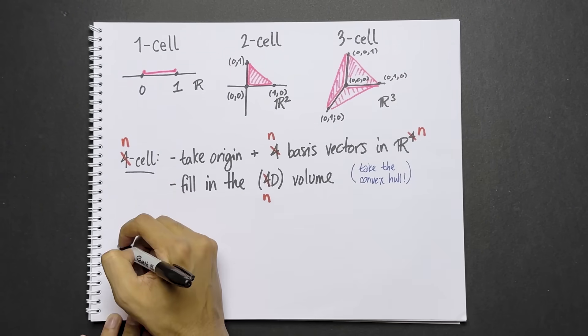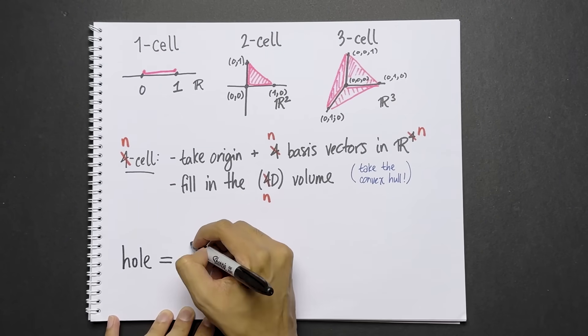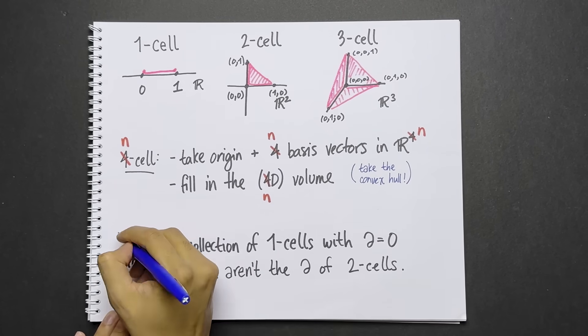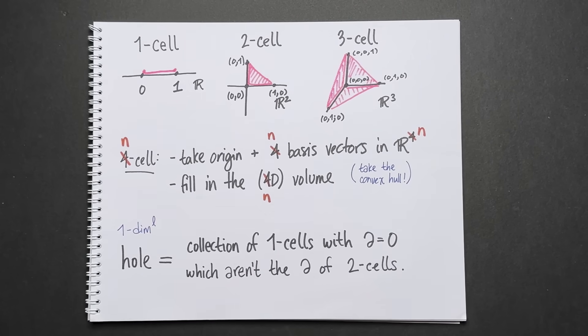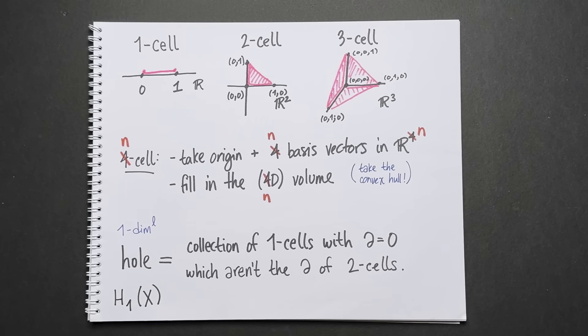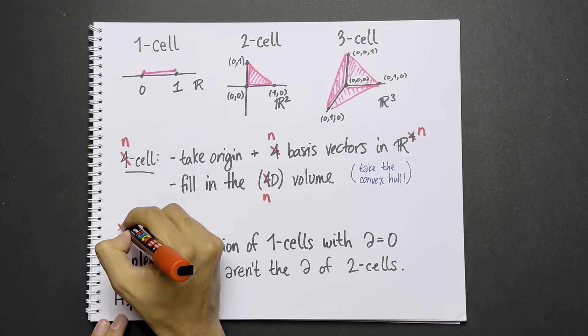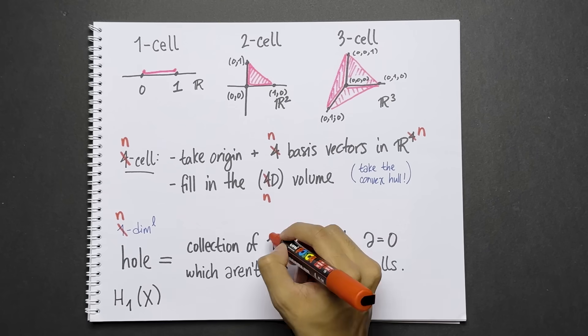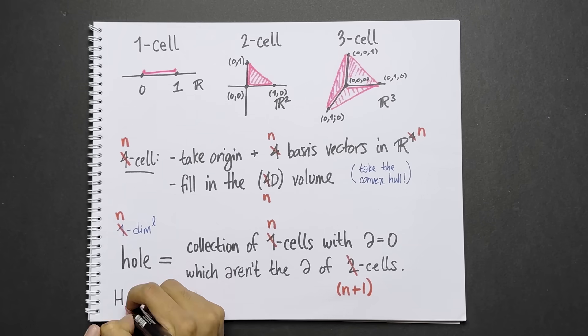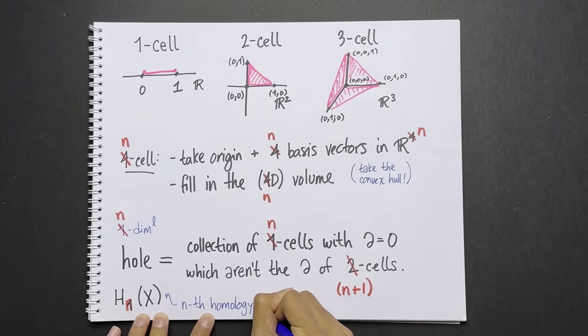What is a hole? Well, we saw before that a hole is a collection of one cells with boundary zero, which is not the boundary of two cells. We might want to call this a one-dimensional hole. And the set of all of these is H1, which we called the first homology group. In general, an n-dimensional hole is a collection of n cells with boundary zero, which is not the boundary of n plus one cells. The set of all of these is Hn, which we call the nth homology group.